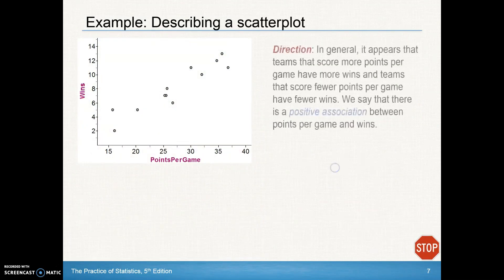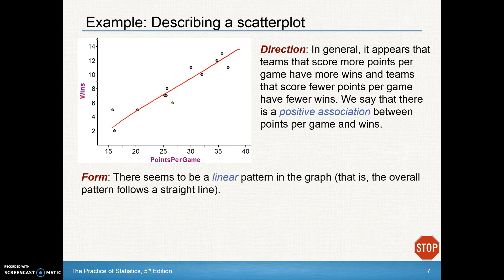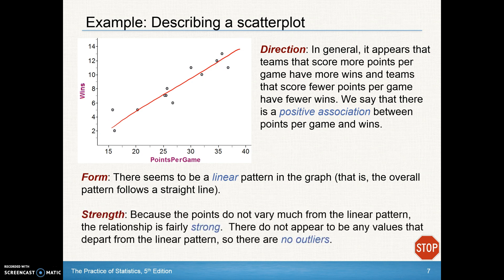Looking at another example: in general, teams that score more points per game have more wins, and teams that score fewer points have fewer wins — that makes sense. So we have a positive association, with a pattern similar to a positive slope. The form looks pretty linear, as a line would fit the dots well. The strength is fairly strong because the points are all pretty tight to that line. There don't appear to be any outliers here.